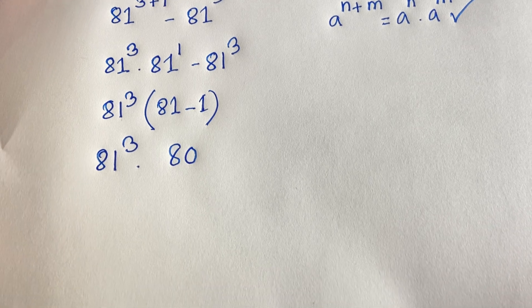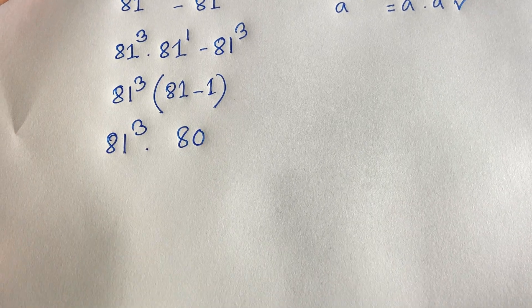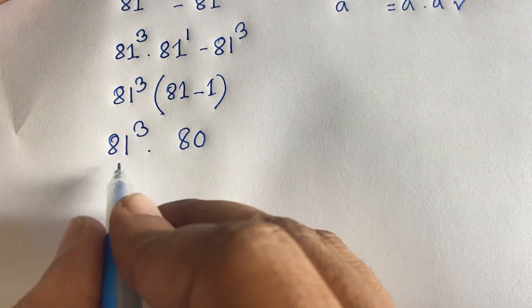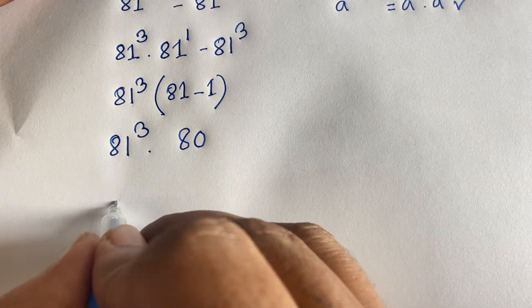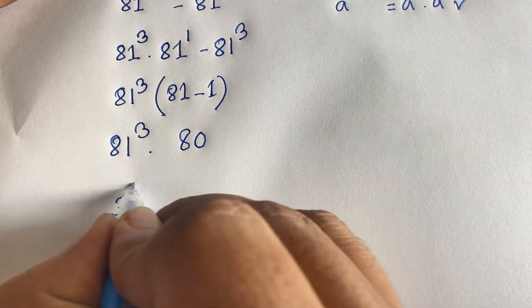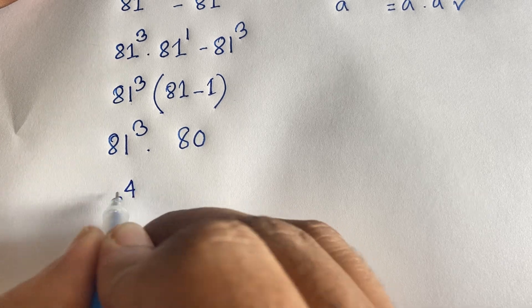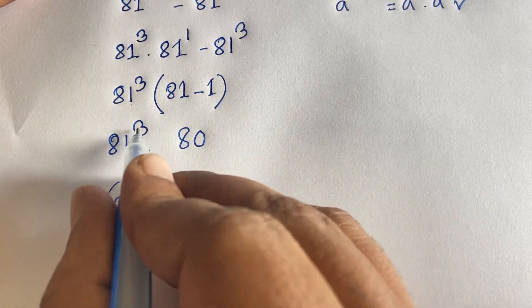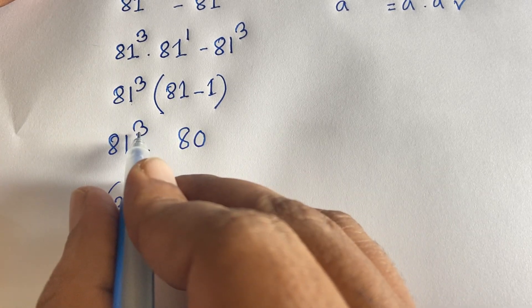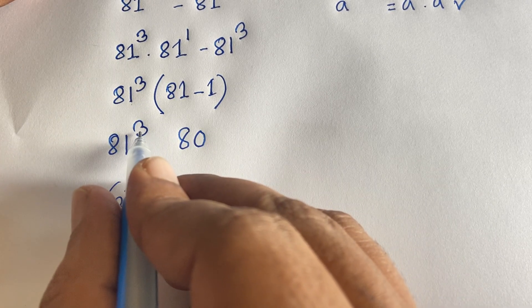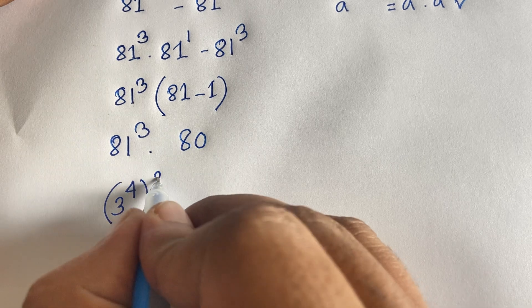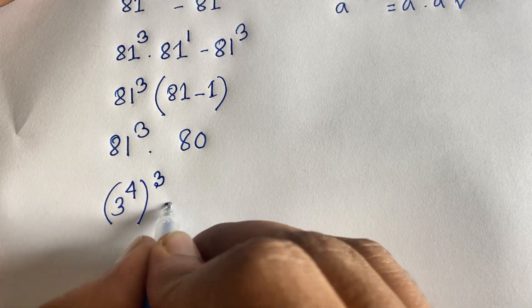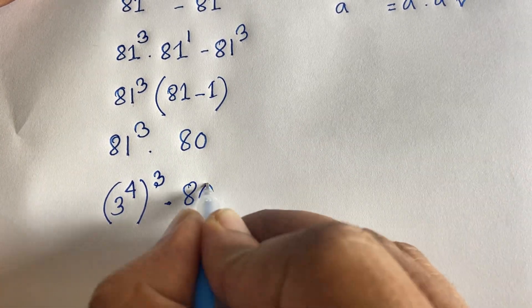Now I can see easily that 81 equals 3 to the power 4. So 81 to the power 3 can be written as (3 to the power 4) to the power 3, times 80.